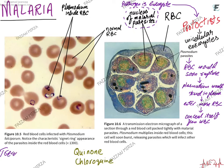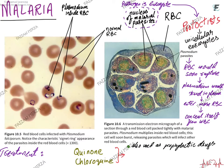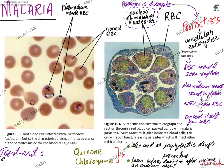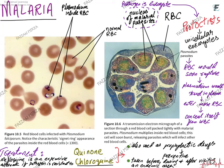The drugs used for the treatment of malaria include quinine and chloroquine. These are basically used as prophylactic drugs — drugs taken before, during, and after a visit to an endemic area. Apart from quinine and chloroquine, treatment can also use mefloquine. Mefloquine is an expensive alternative, but it is used for malarial patients who have a resistant pathogen that cannot be cured with quinine or chloroquine.